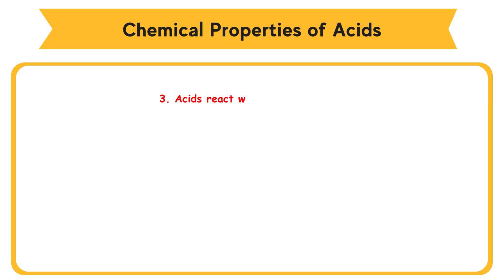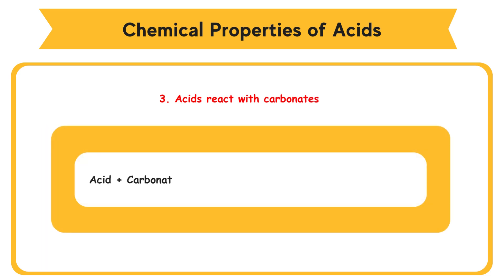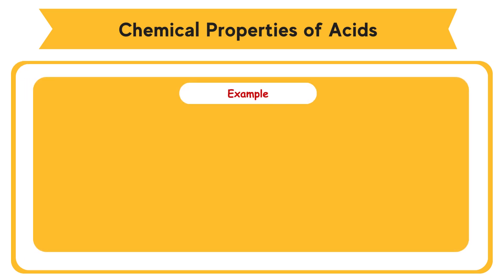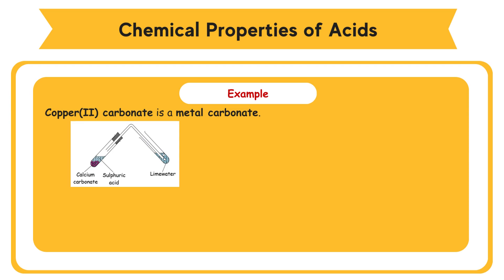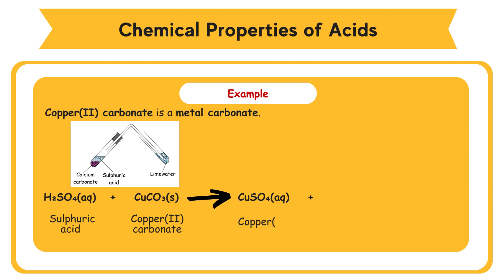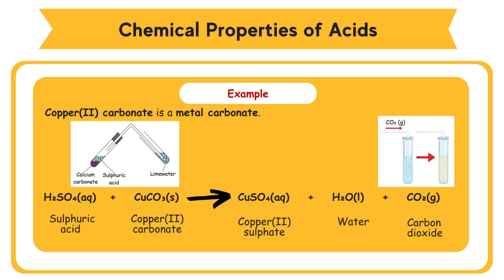3. Acids React with Carbonates. An acid reacts with a metal carbonate to produce a salt, water, and carbon dioxide gas. Example: Copper(II) Carbonate is a metal carbonate. It reacts with acids to form blue Copper(II) Sulfate salt, water, and carbon dioxide. Sulfuric Acid, H2SO4, reacts with Copper(II) Carbonate, CuCO3, to become Copper(II) Sulfate, CuSO4, water, H2O, and carbon dioxide, CO2. When carbon dioxide gas is bubbled into limewater, a white precipitate of calcium carbonate is formed. The white precipitate causes the limewater to turn milky.